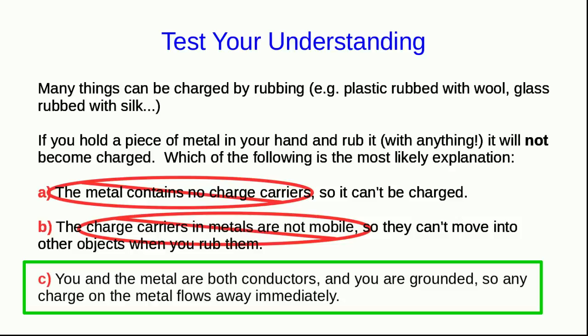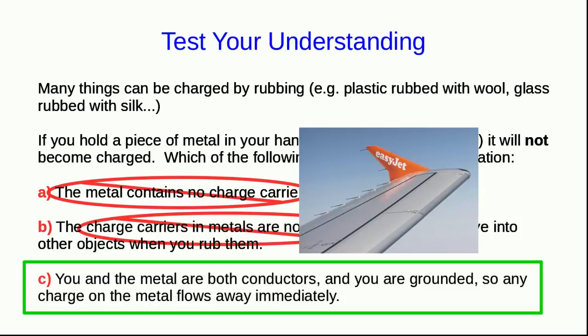You can charge a metal by rubbing if you insulate it from ground. So for example, when an airplane flies through a cloud, the water droplets rubbing on the metal skin of the plane charge the plane. If you've looked out the window, you might have noticed these pointy things sticking off the rear edges of the wings.